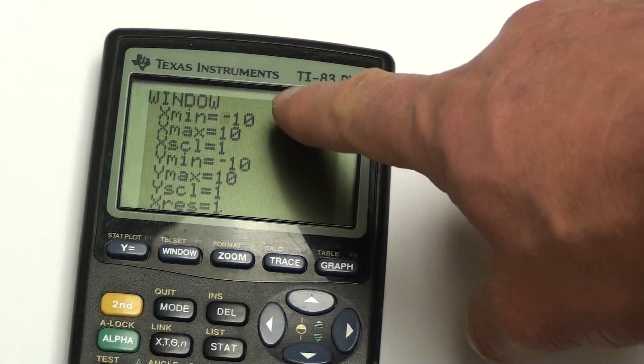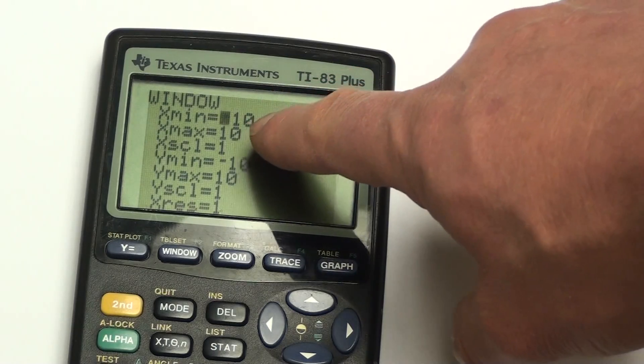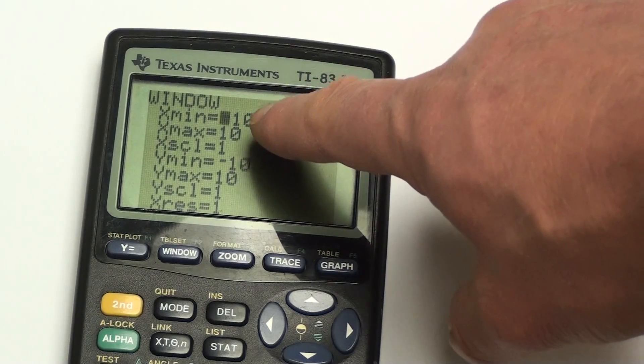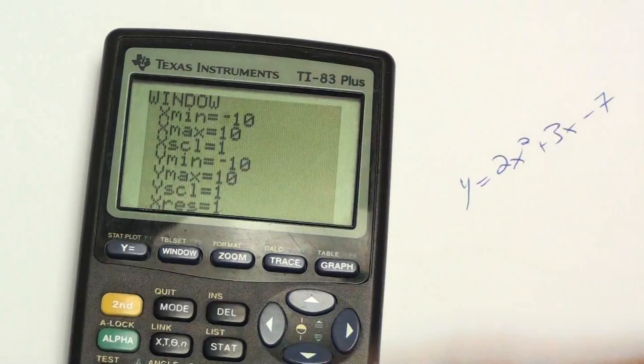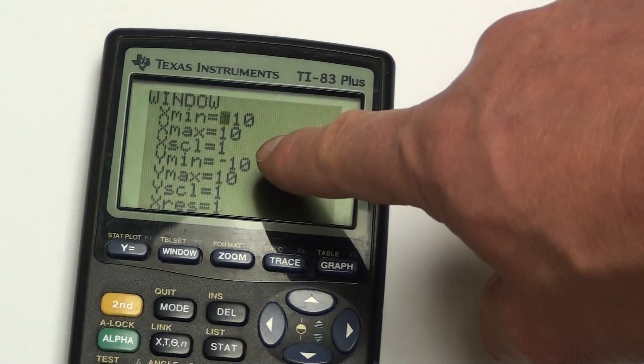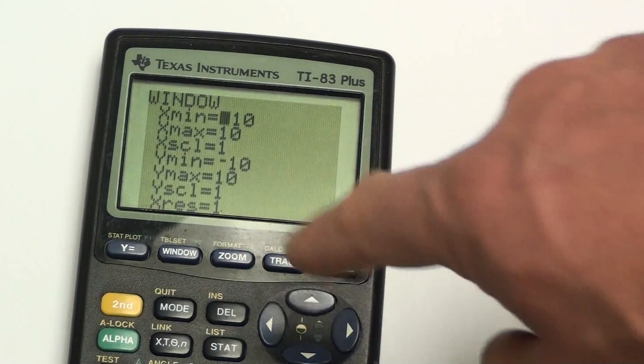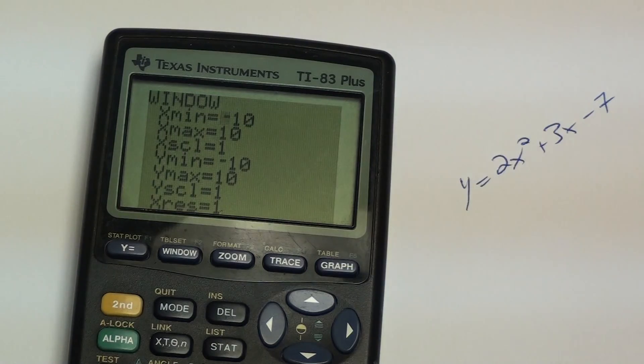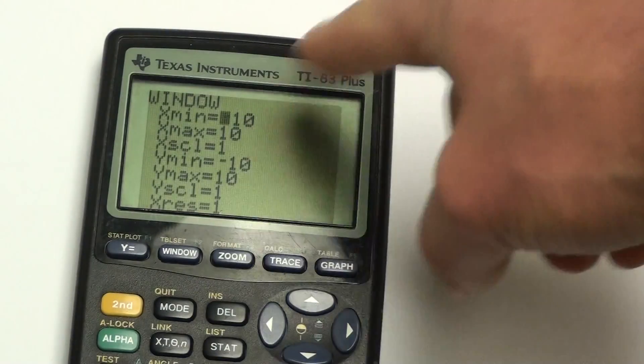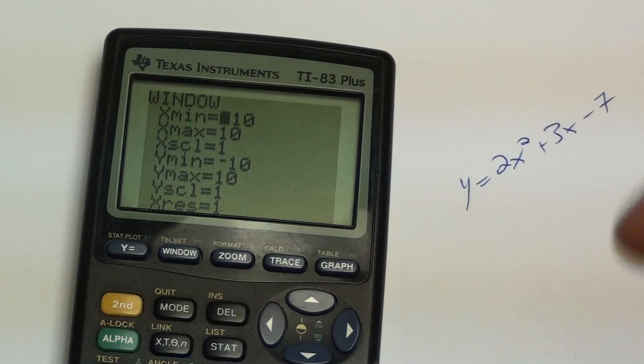Change your x components and your y components. So my smallest x value possible is minus 10. My largest is positive 10. My y's, the smallest y value allowed on the screen is minus 10. The largest y value is positive 10. If your quadratic doesn't show up, you may need to play around with those values so that it actually fits into the screen.